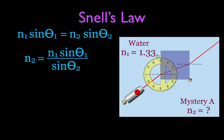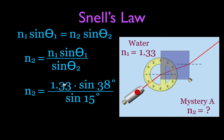N1 is 1.33 because that's the water it's coming from. The angle of incidence is about 38 degrees, and the angle of refraction is 15 degrees. So N2 = 1.33 × sin(38°) / sin(15°), which gives us an index of refraction for mystery material A of about 2.41. That is how you use Snell's law to figure out an unknown index of refraction.